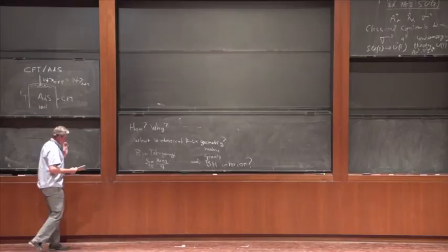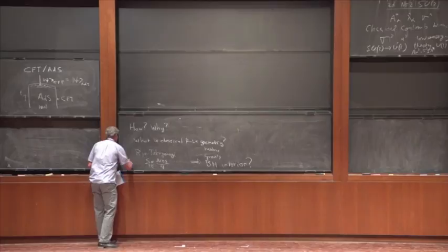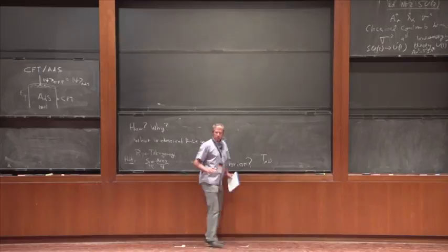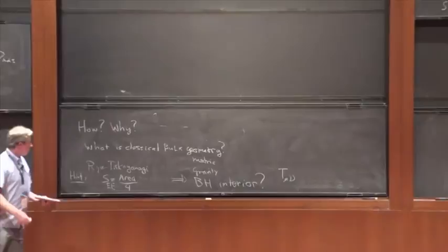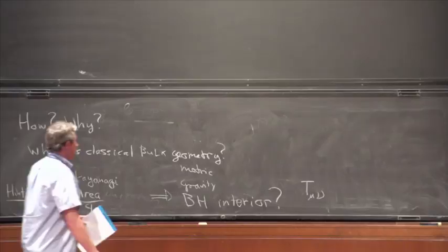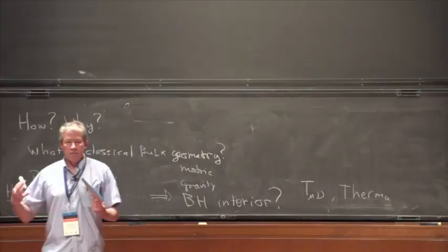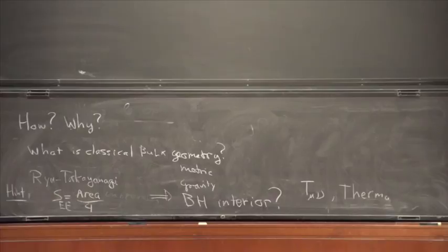The fact that the area of the minimal surface for a given boundary curve extends into the bulk gives you a handle on some aspects of the bulk. This is an important hint about the bulk geometry. The boundary theory also has a stress energy tensor, and the physics of boundary correlation functions are related to correlation functions of gravitons in the bulk. Thermodynamics and entropies also give us a way of extracting gravitational physics from boundary considerations.